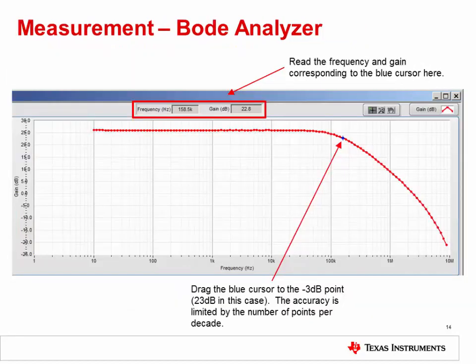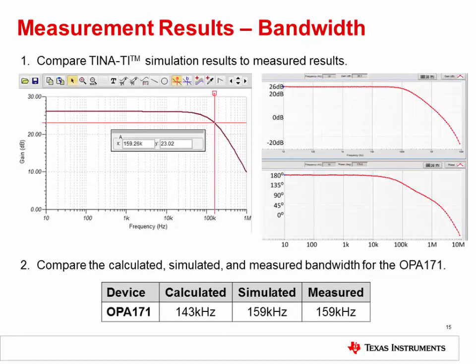You should see a result similar to this. Enable the cursor, then drag the cursor — the blue dot — to the minus 3 dB point, or 23 dB in this case. Take note of the frequency. In this case, the result is 159 kilohertz, although your results may vary slightly. Compare the bandwidth measurement of the VirtualBench to the simulated results from TINA-TI. Also compare these to your calculated results. You should see very good correlation between all three values, although your numbers may vary slightly.